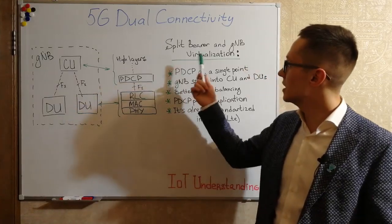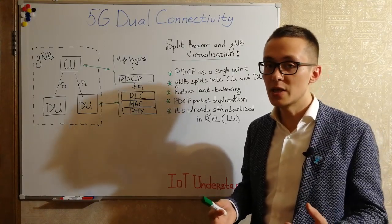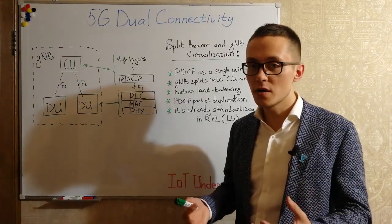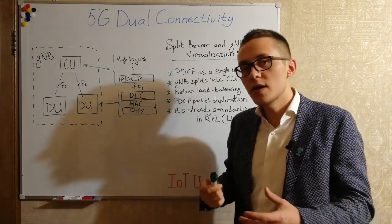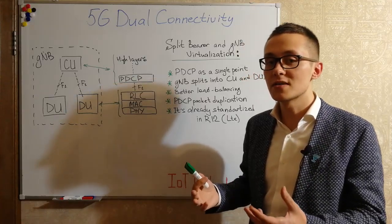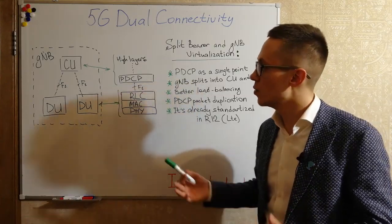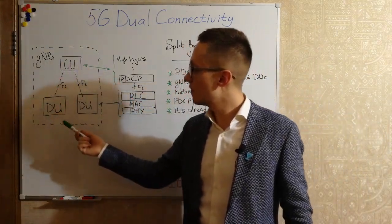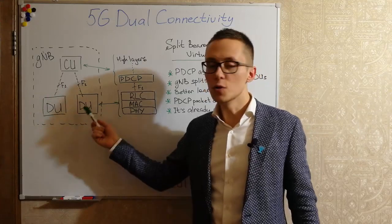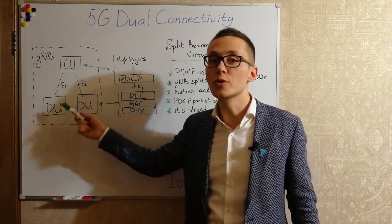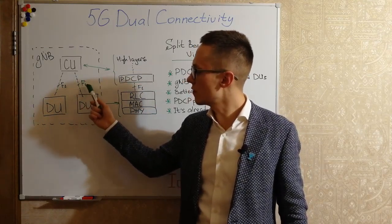So let's start with split bearer. Split bearer is a technology where we can split the radio bearer on the PDCP layer, and in that way it helps us to support the concept of gNodeB virtualization. gNodeB virtualization is when we split our 5G base station into a central unit and a few dedicated distributed units, and we can have an F1 interface between them.